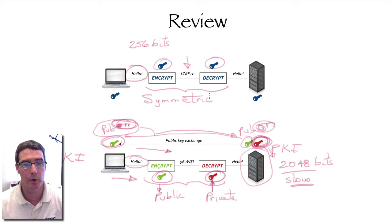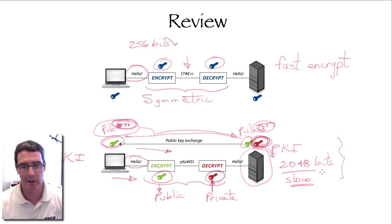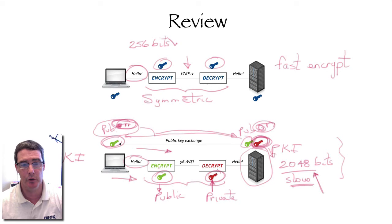Why would we want to do that? Well, because symmetric keys are 256 bits and the encryption is very much faster. We use this slower public key system with larger keys — to get the same level of security as 256-bit symmetric, we need up to 2048 bits — but we're only doing that at the beginning of our conversation. So, two systems.